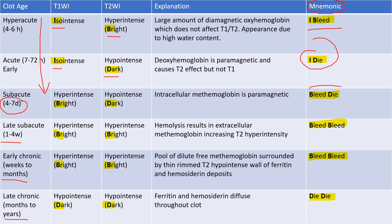Then you have 'BLEED DIE' — in case of subacute hematoma, that is four to seven days old. In this, T1 is bright and T2 is dark. So: bleed (bright) on T1, die (dark) on T2.